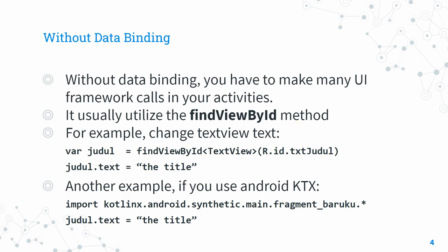Without data binding, if you want to show data in your layout, you use findViewByID. For example, to change a TextView with the title, you call findViewByID, look for the ID of the widget in the layout — say the TextView ID — store it in a variable, then change the text attribute.